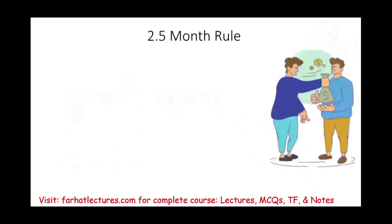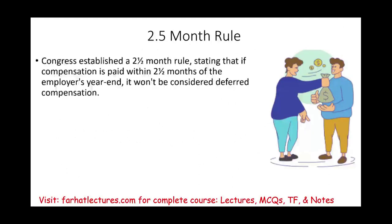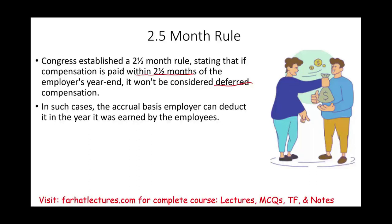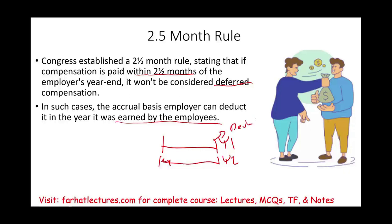There is a two-and-a-half-month rule established by Congress to allow compensation to be deducted even if paid up to two and a half months after year end. An accrual taxpayer can deduct compensation in the year it was earned by the employee, as long as it is paid within two and a half months of the employer's year end. If paid after that window, the deduction must wait until the year the employee received and reported it as income.